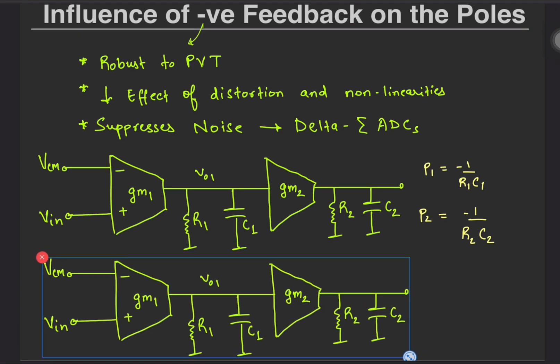Now suppose we connect GM1 in negative feedback as shown. What is the pole location now? That can be easily found by looking at the effective resistance across the capacitor C1 by applying a test voltage at VO1. We see that the GM pulls in a current of GM1 times VT making it appear like a resistor of 1 by GM1.